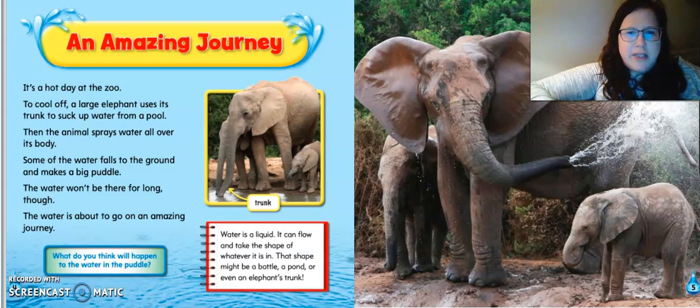So we are going to read this awesome book today about the water cycle, and it features one of my favorite animals, an elephant. An amazing journey. It's a hot day at the zoo. To cool off, a large elephant uses its trunk to suck up water from a pool. The animal sprays water all over its body. Some of the water falls to the ground and makes a big puddle. The water won't be there for long, though. The water is about to go on an amazing journey.